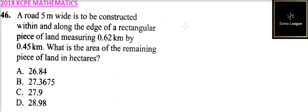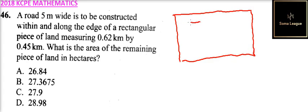We can make a sketch here to help us be able to get the area and see how it looks. So that is a piece of land. A road is to be constructed all around.